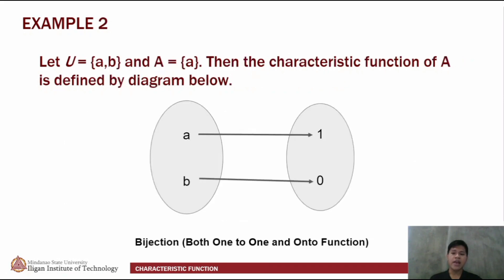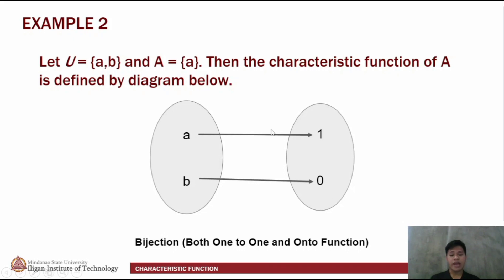For our second example, let U be a set containing the elements a and b, and set A containing the element a only. Then the characteristic function of A is defined by the diagram below. We can see that a is matched with the value 1, and b is matched with the value 0, since only the element a is under the set A. This diagram is a bijection, since it is clearly seen on the diagram that it is a one-to-one function and at the same time an onto function, just as we remember from our previous discussions.